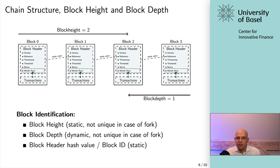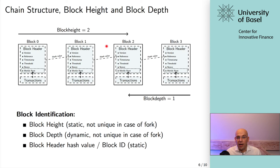When referring to a specific block, there are different ways to do so. Number one, you could talk about the block height — that's a static number starting with block zero having height zero, height one, height two, and so on. It's static because when additional blocks are added, the number for a specific block doesn't change. Block three will always be the same one regardless of how many other blocks are added. However, in case of a fork — as you will see later — the block height may not be unique; there may be competing blocks at the same height.